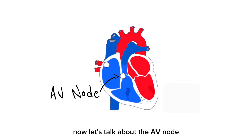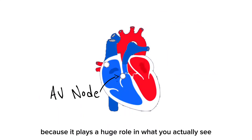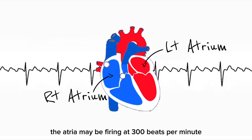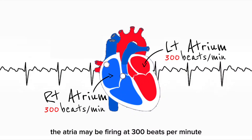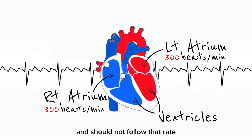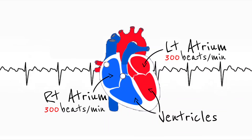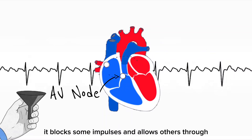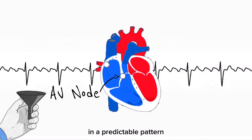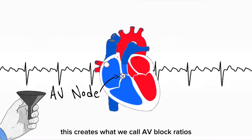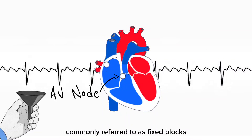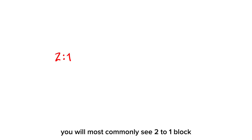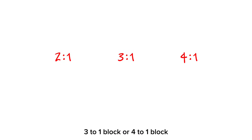Now let's talk about the AV node, because it plays a huge role in what you actually see on the ECG. The atria may be firing at 300 beats per minute, but the ventricles cannot and should not follow that rate. The AV node acts like a filter — it blocks some impulses and allows others through in a predictable pattern. This creates what we call AV block ratios, commonly referred to as fixed blocks. You will most commonly see 2-to-1 block, 3-to-1 block, or 4-to-1 block.